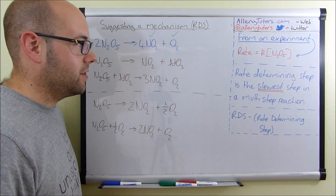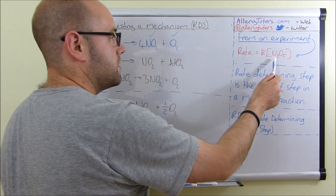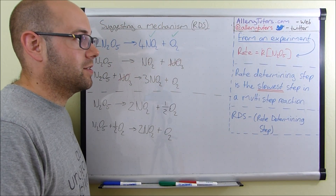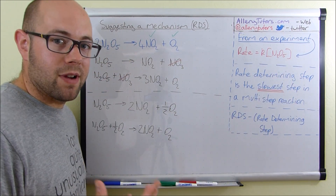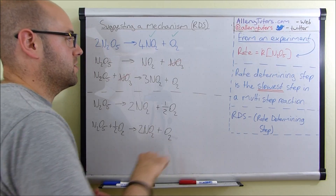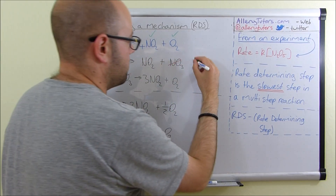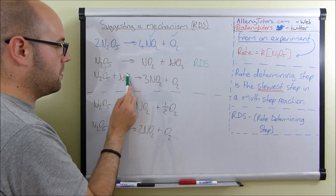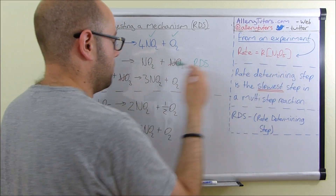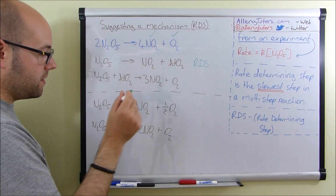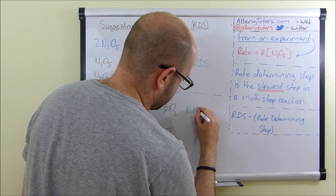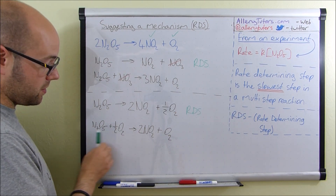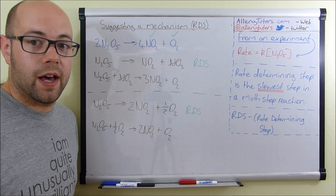Finally, let's identify the rate determining step. In mechanism 1, step one has just one molecule of N₂O₅ and nothing else, which matches our rate expression — so step one is the rate determining step (RDS). It can't be step two because that contains NO₃, and if it were the RDS you would expect to see NO₃ in the rate expression. Similarly in mechanism 2, step one is the RDS. Step two can't be the RDS because it contains O₂, and if it were you'd expect O₂ to appear in the rate expression.